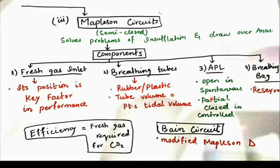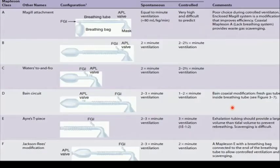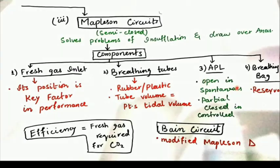Spontaneous ventilation is when the patient breathes on their own, and controlled ventilation is when we control the patient's ventilation through a ventilator. During spontaneous ventilation, the APL valve should be completely open.